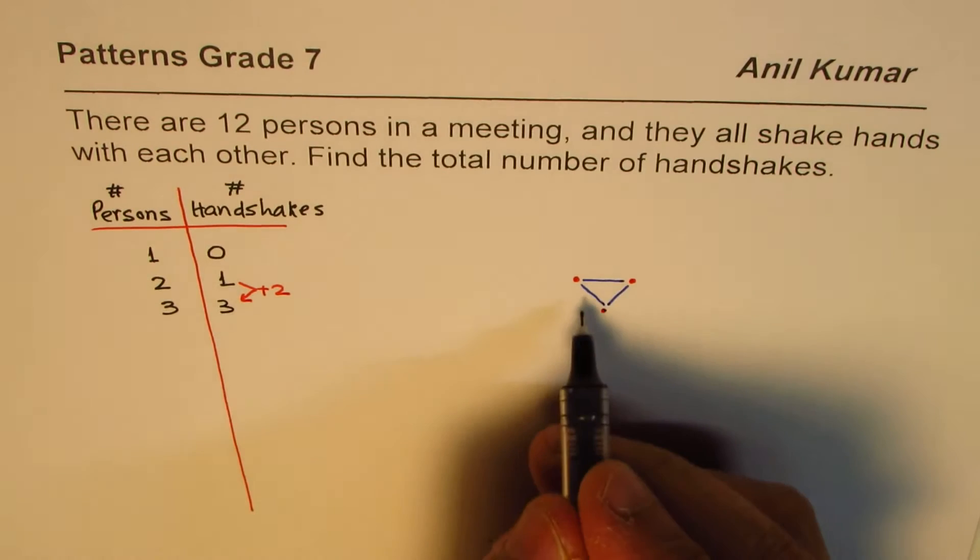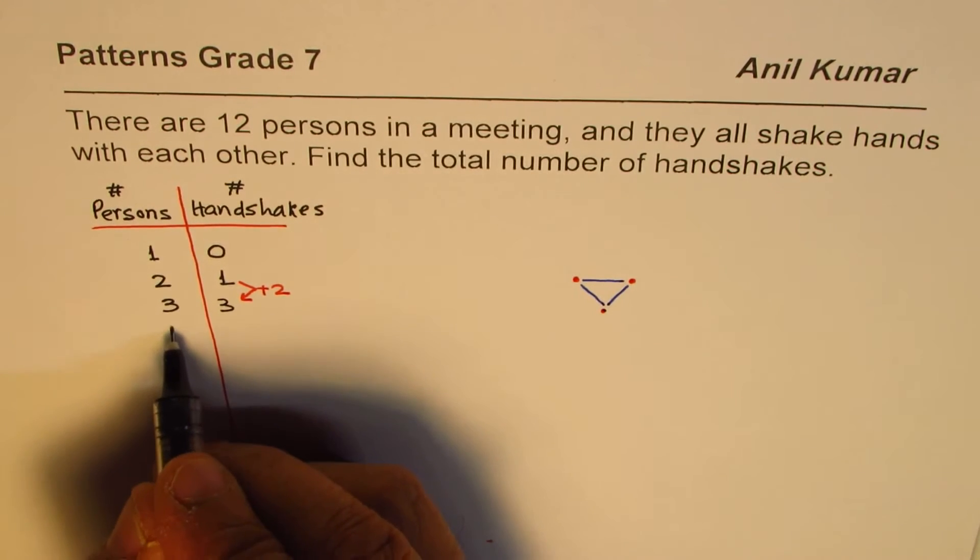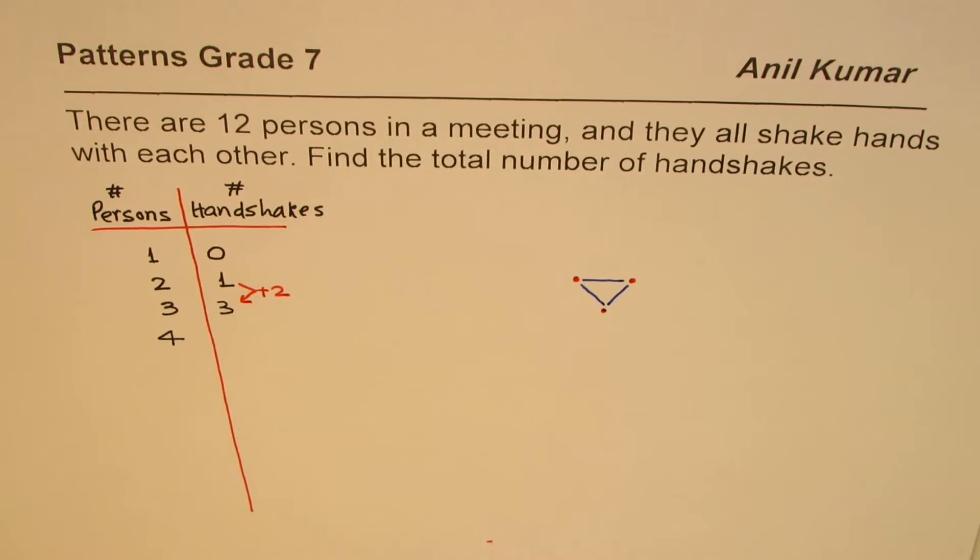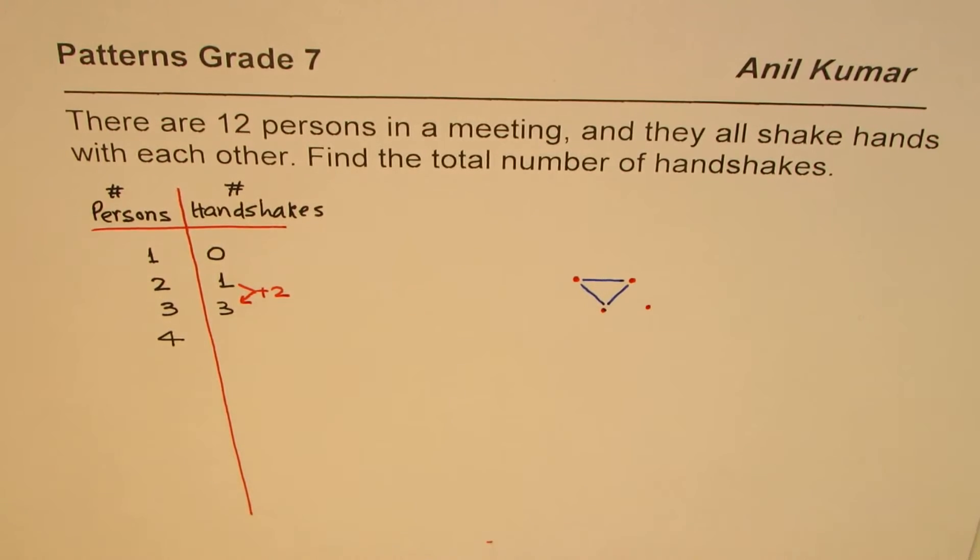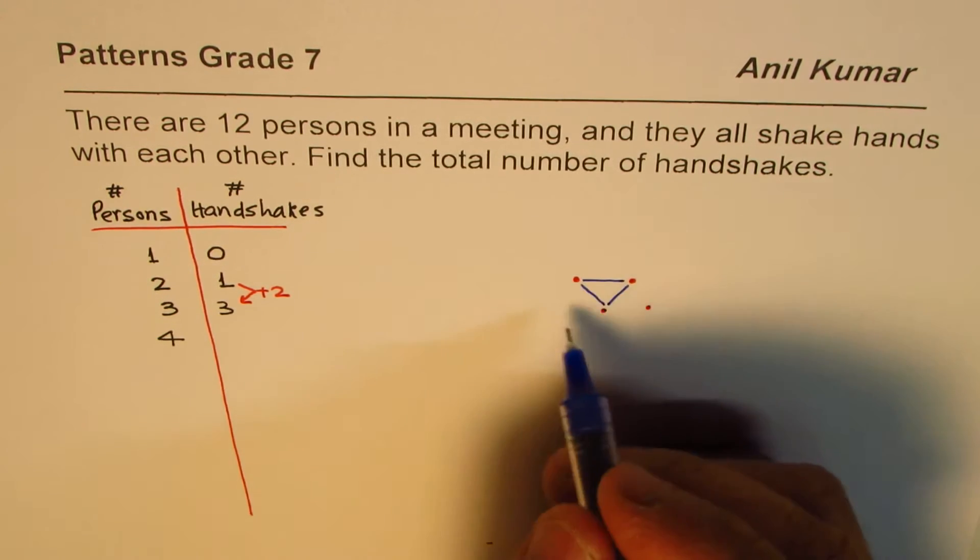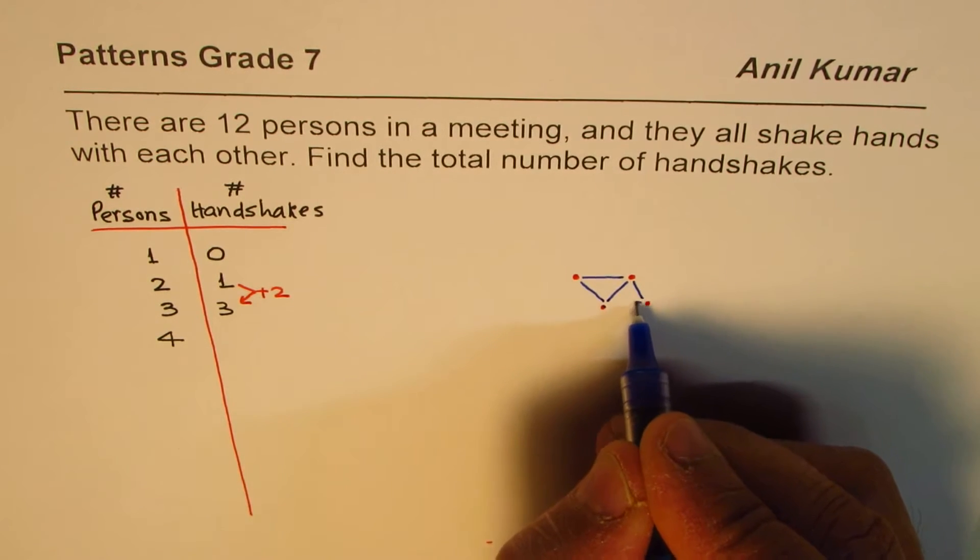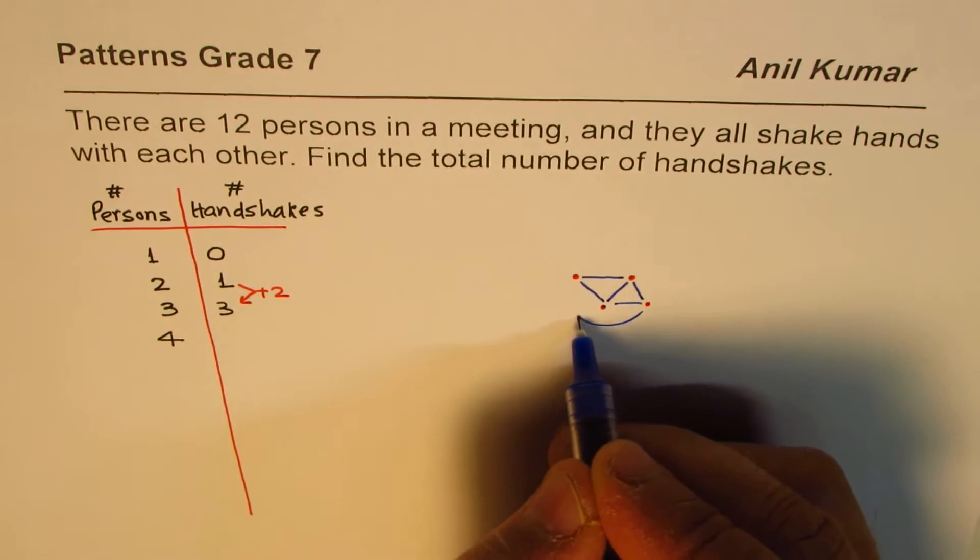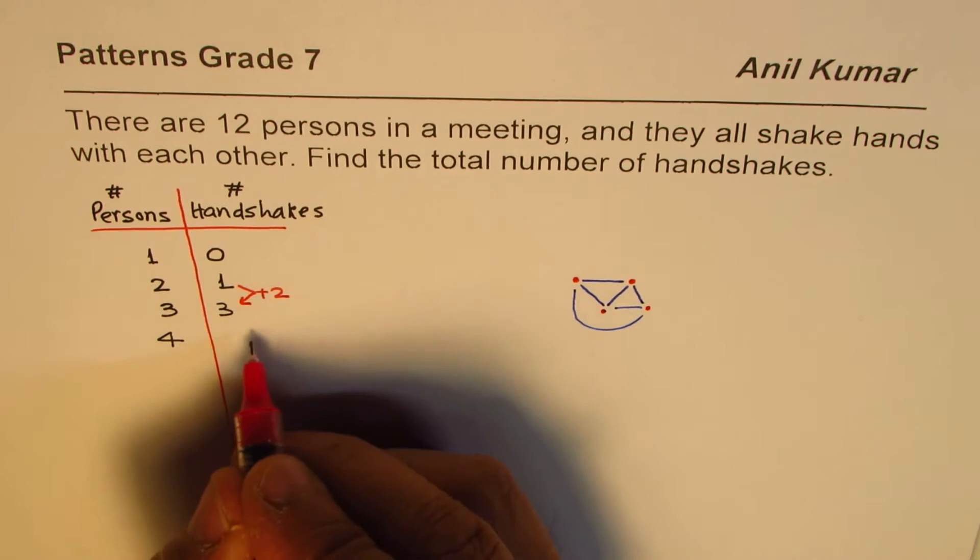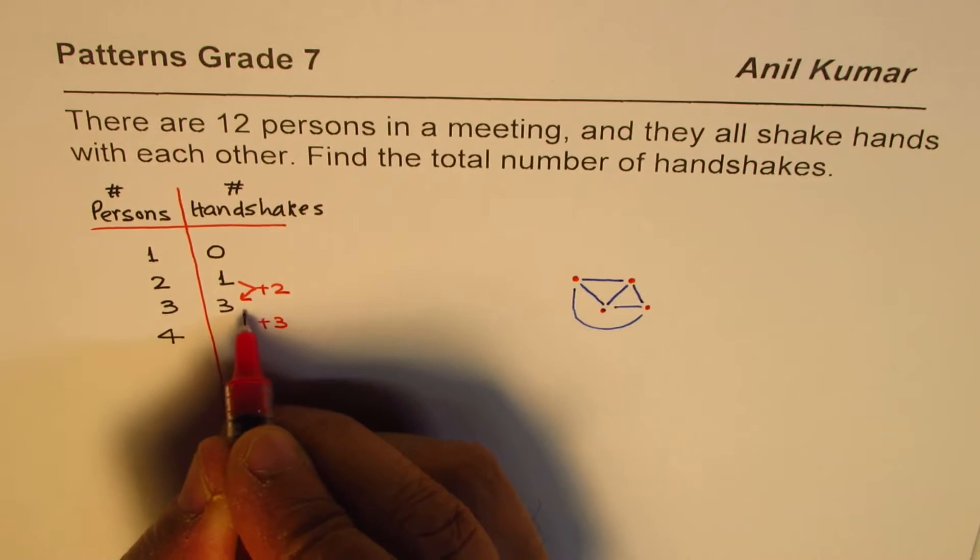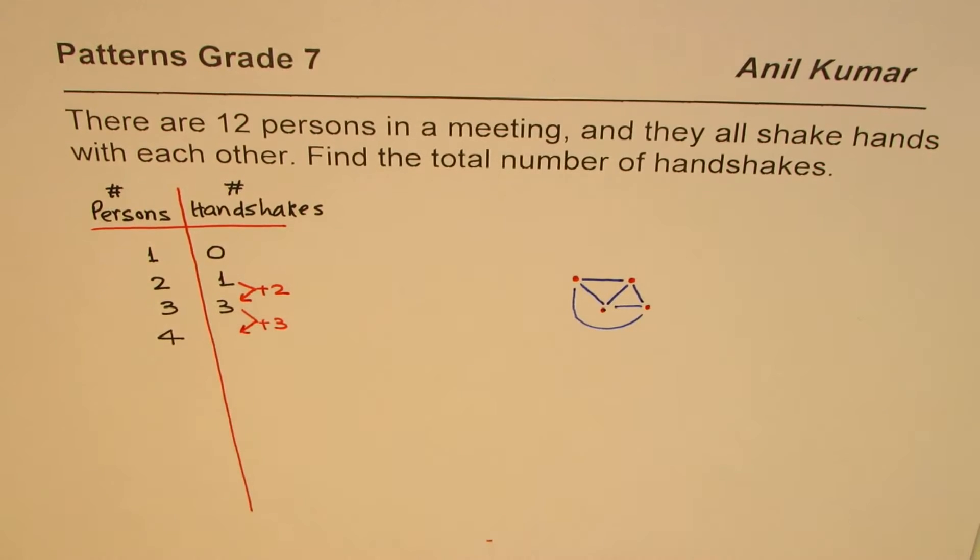How about the fourth person joining in? If the fourth person joins in, then the fourth person will shake hands with three already existing. So one, two, and three. That means plus 3 to what was already existing, so we get a new number which is 3 plus 3, which is 6.